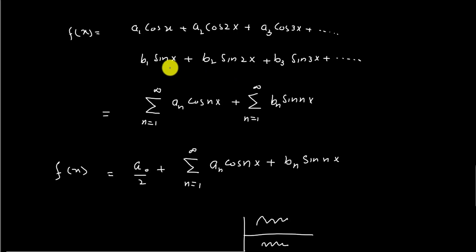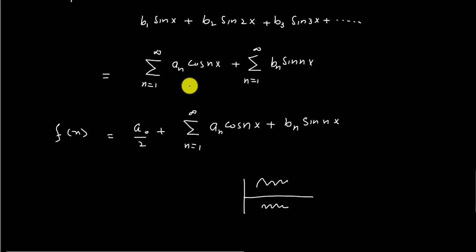In this series, a1, a2, a3, b1, b2, b3 are called Fourier coefficients. We can find these coefficients by equations which we will derive in the next few lectures. In order to apply Fourier series, the function must satisfy certain conditions which are called Dirichlet conditions.